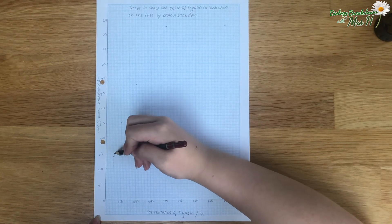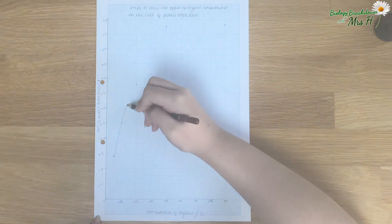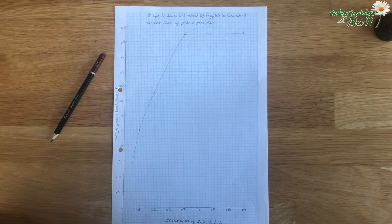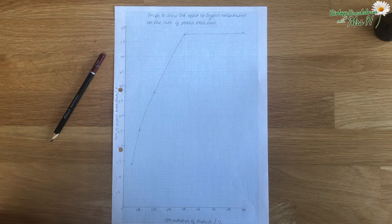It's going to reach a point where the rate of reaction can't go any faster and that's going to be due to limiting factors. Here again is going to be the substrate concentration.